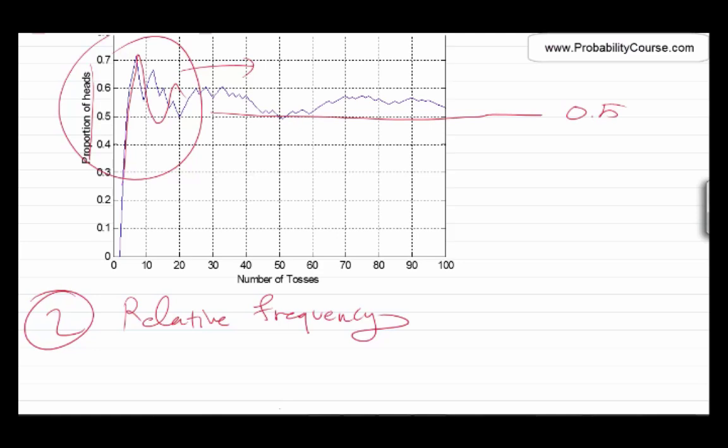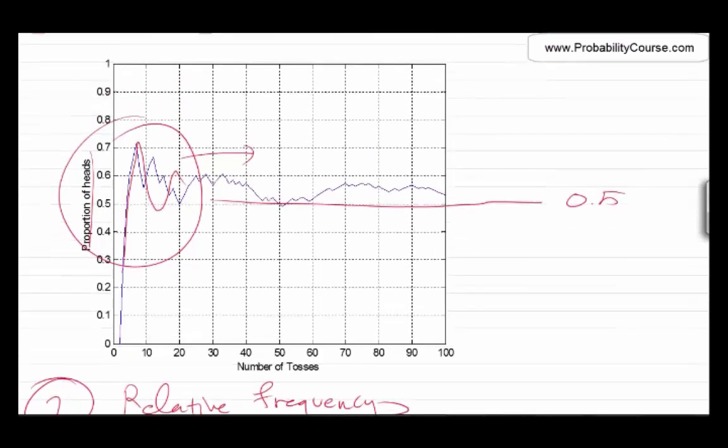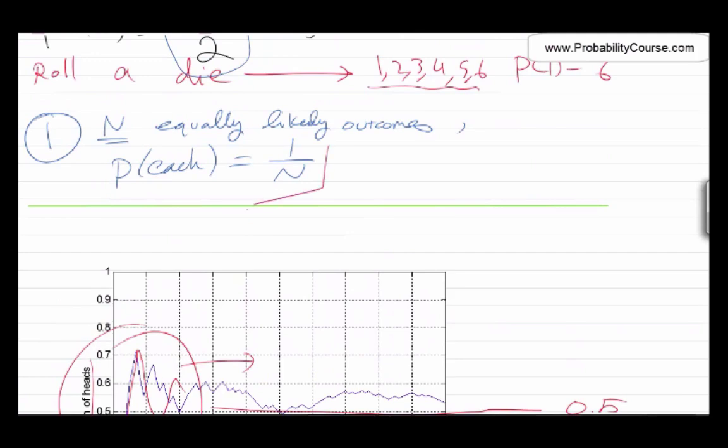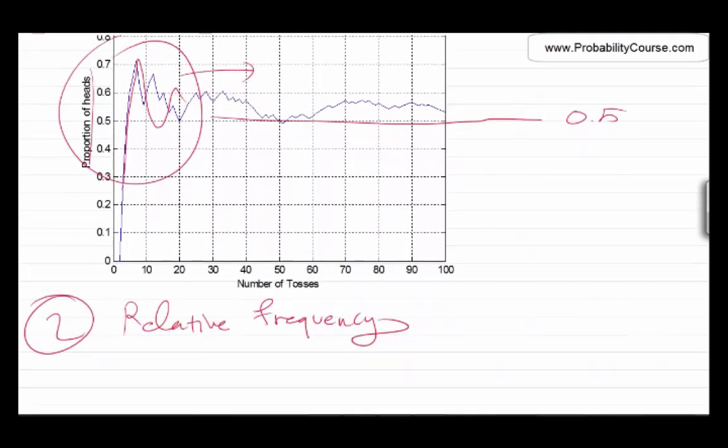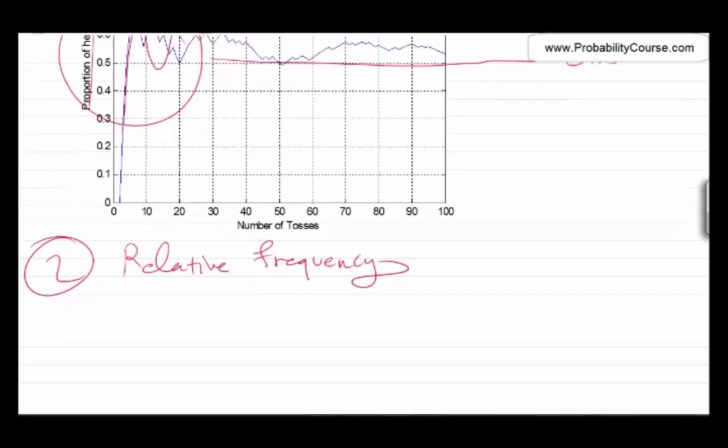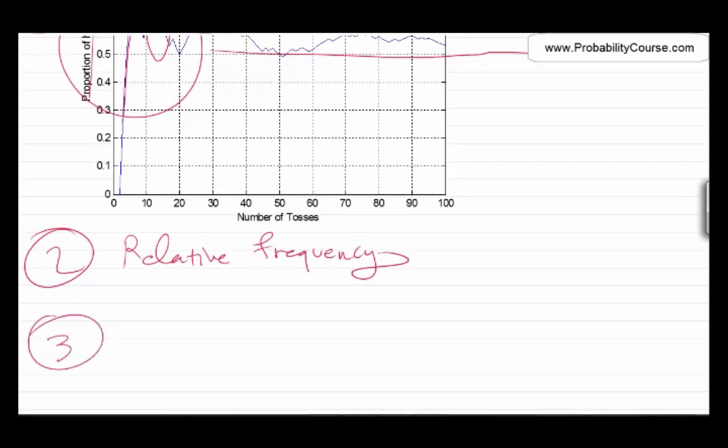So we have seen two interpretations. One was when you have equally likely outcomes, and the second was by repeating the same experiment a large number of times. But there are situations in real life that none of these explanations can work.